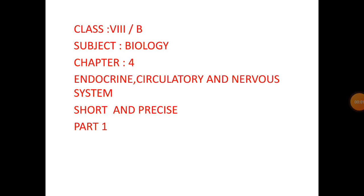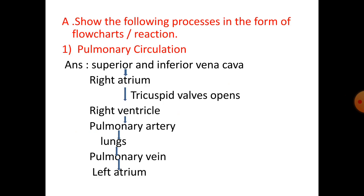Today we will discuss the question answer section of chapter 4: endocrine, circulatory, and nervous system. We will start from the short and precise section first. Number A: show the following processes in the form of flow charts.